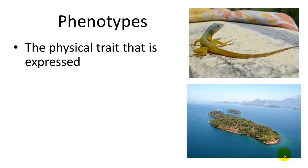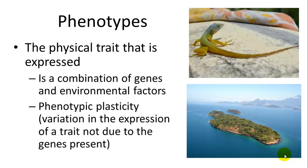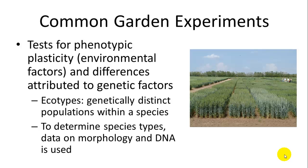With genes you have a physical expression, and that's called a phenotype. But not all phenotypes are specifically genes — there are environmental factors which also affect which genes are expressed. Phenotypic plasticity is the variation in the expression of a trait not due to the genes present, but due to the environment. Common garden experiments are used to tease out the differences between genotype and phenotype, essentially testing for phenotypic plasticity.